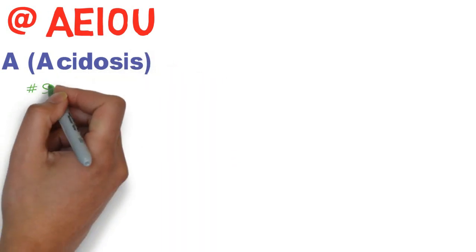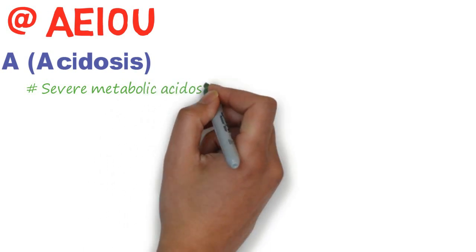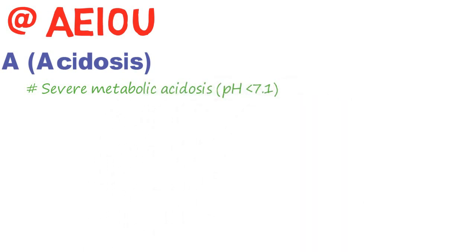The first indication is A for Acidosis: severe metabolic acidosis with pH less than 7.1.